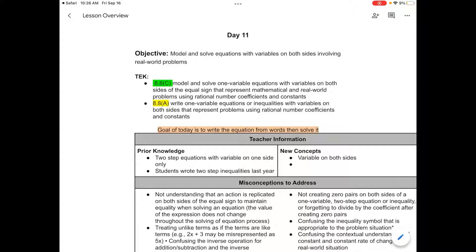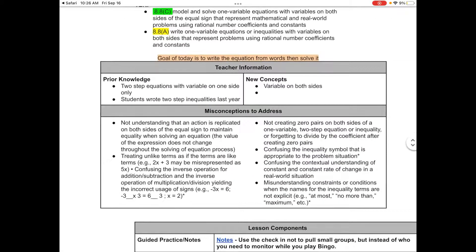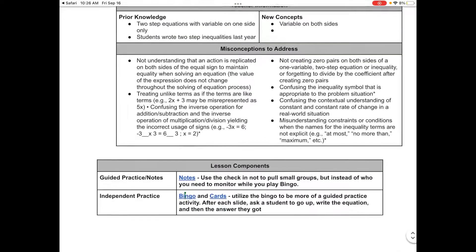Some of the prior knowledge is that students did two-step equations with variables on one side in seventh grade, and they wrote two-step inequalities as well. The new concept is that there's going to be a variable on both sides. There's a few misconceptions that students may have, and a few of these involve inequalities, which will be covered the following week, not right now.